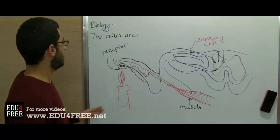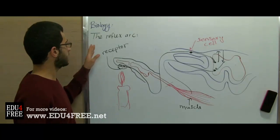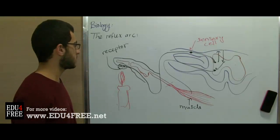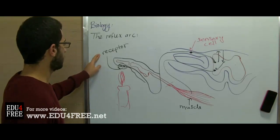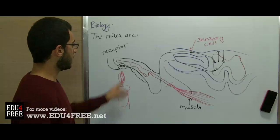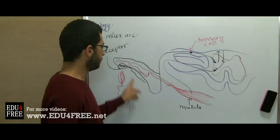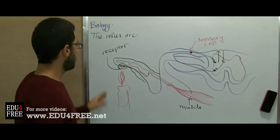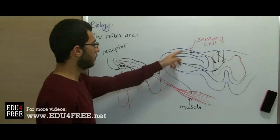From this, we can conclude that in most cases of the reflex action, there are five elements. First, we have the receptor, or the sensory organ. Then we have the sensory neuron, through which the stimulus moves.